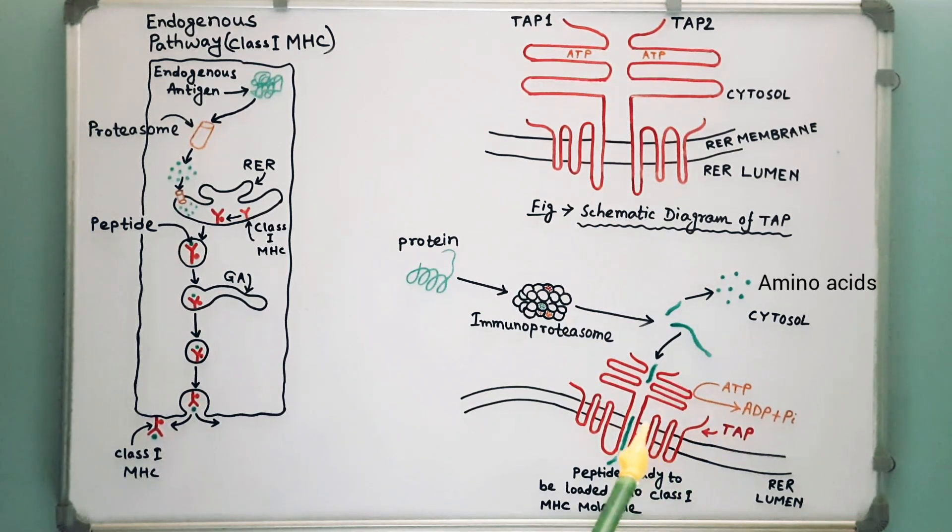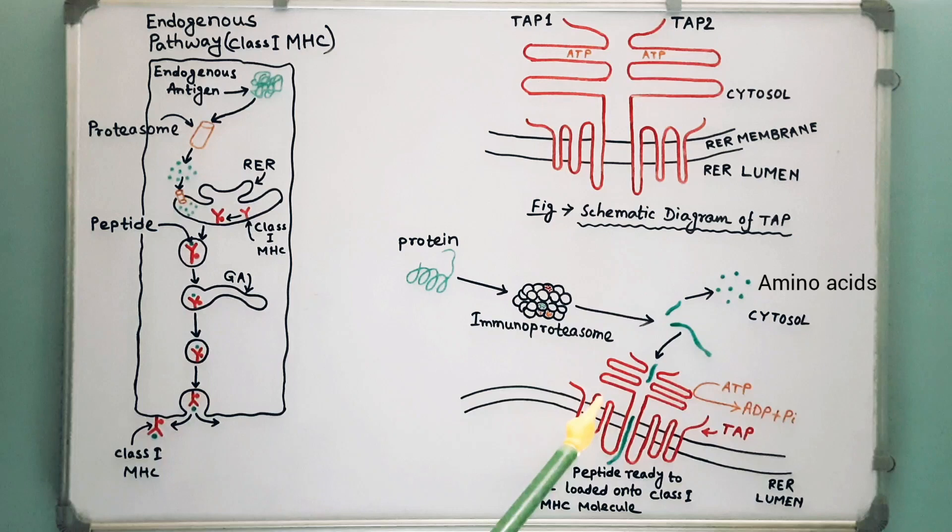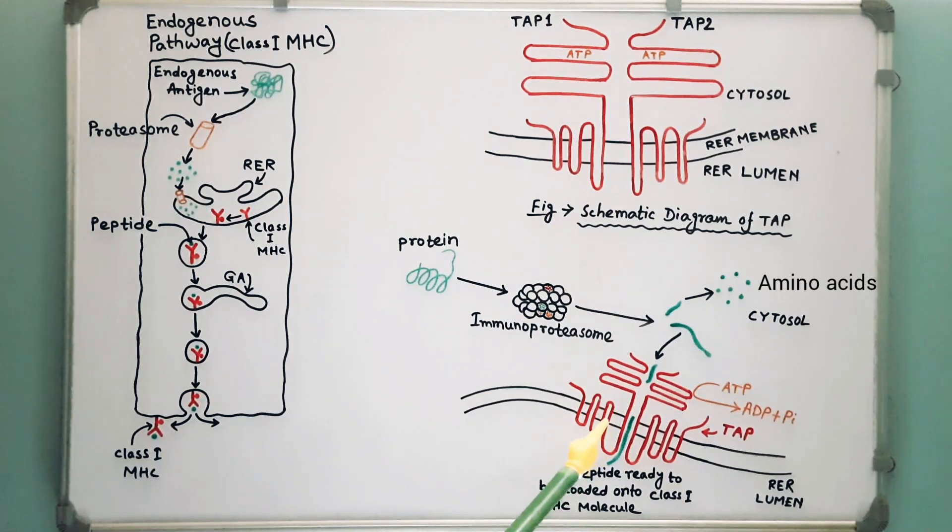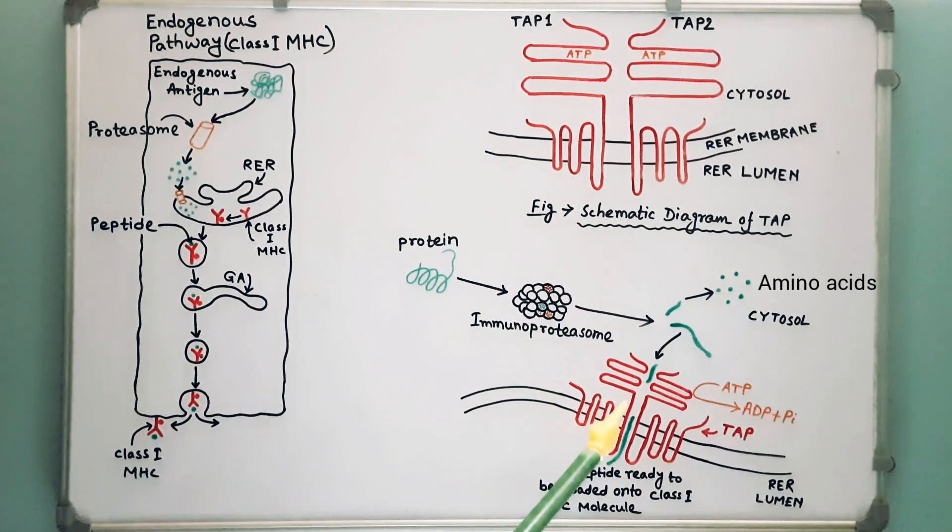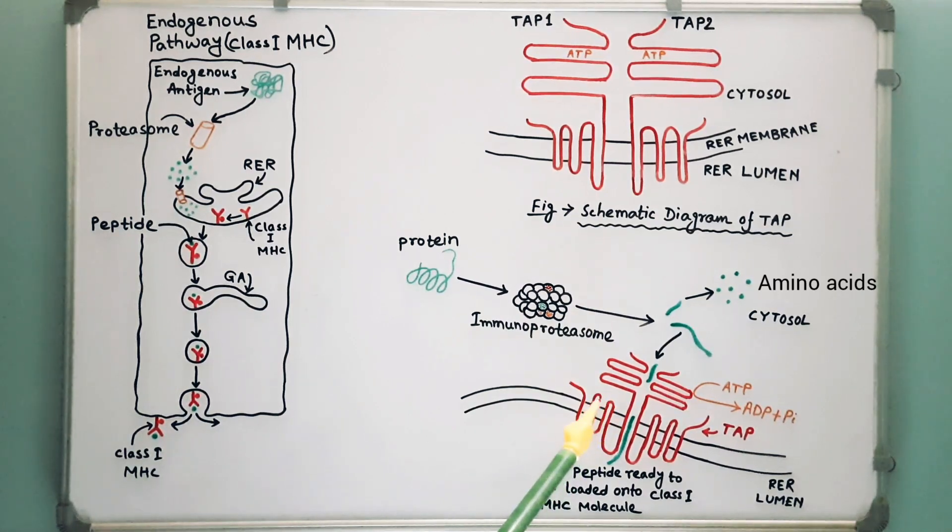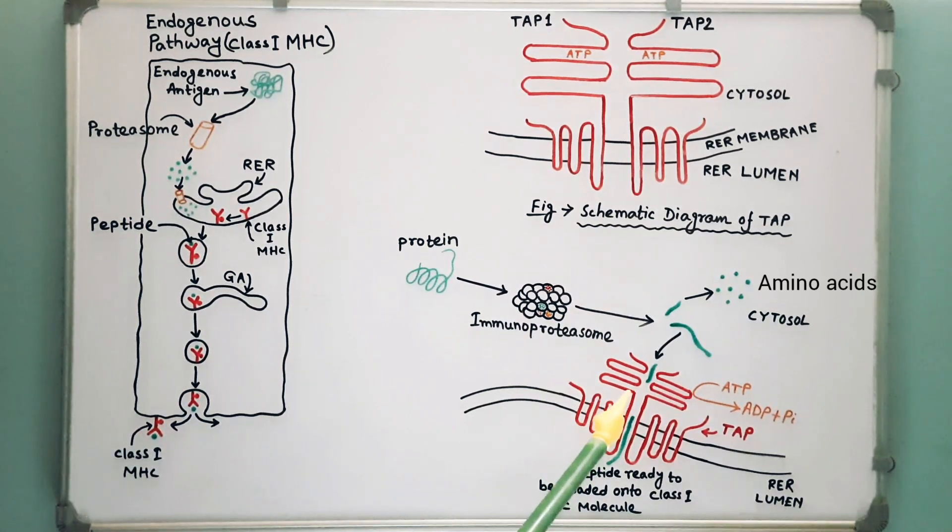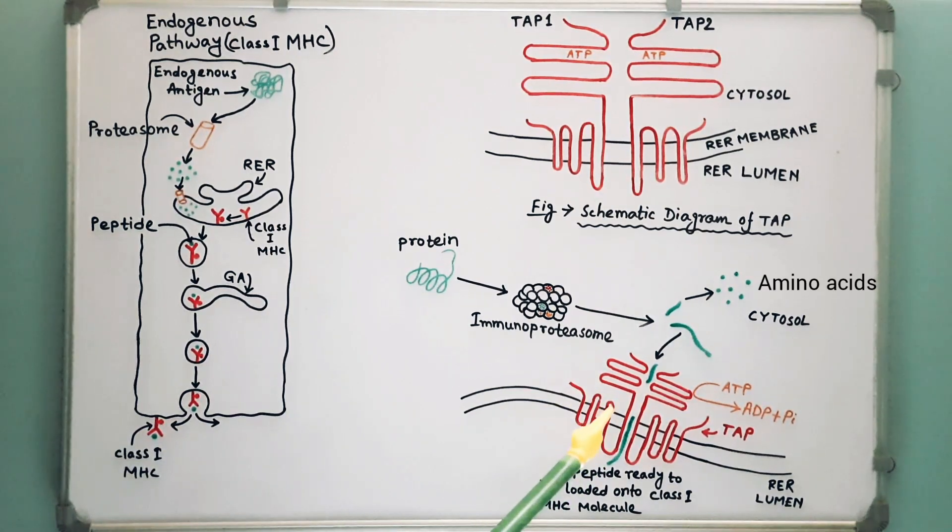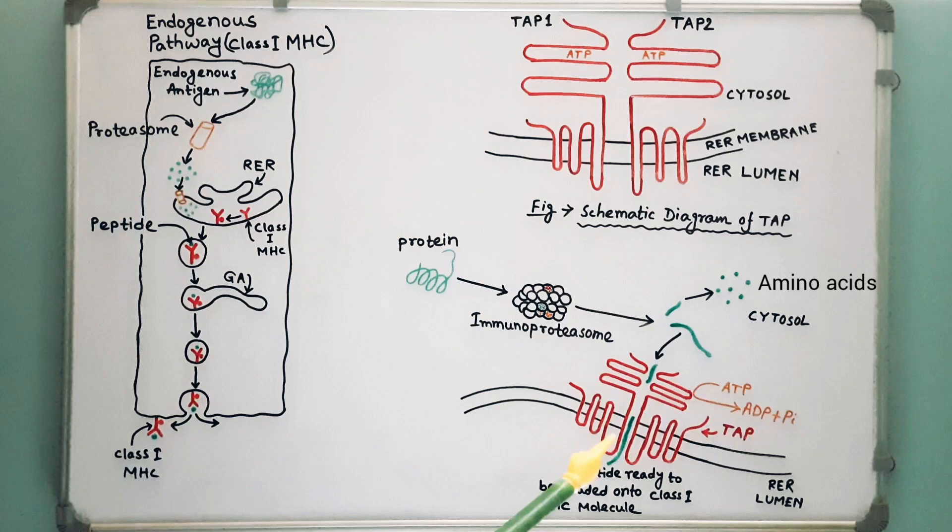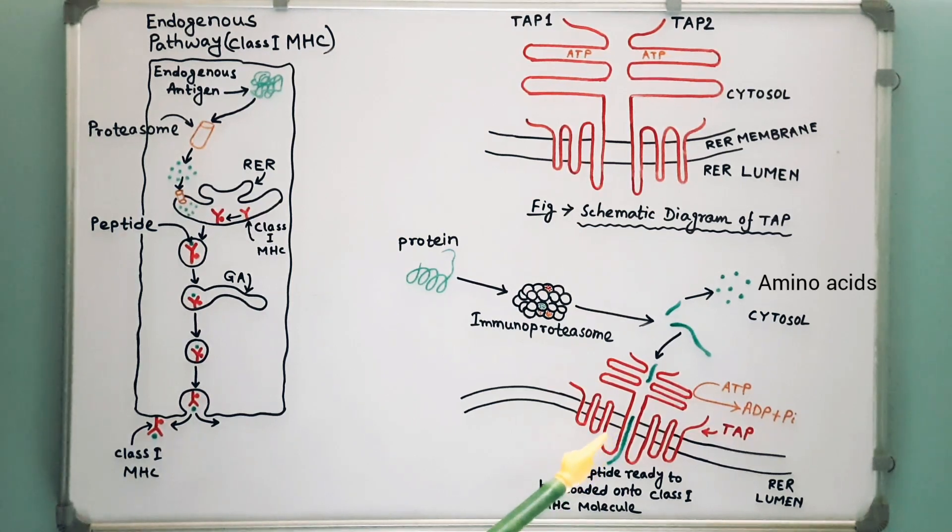TAP has affinity for peptides containing 8 to 16 amino acids. The optimal peptide length for class 1 MHC binding is around 9 amino acids. Longer peptides are trimmed by enzymes present in the endoplasmic reticulum, such as endoplasmic reticulum aminopeptidase or ERAP.